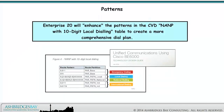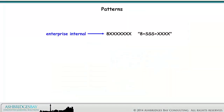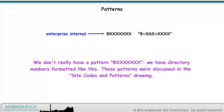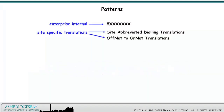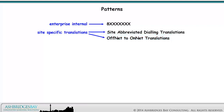Enterprise 20 will enhance the patterns in the CVD NANP with 10-digit local dialing table to create a more comprehensive dial plan. Our first pattern is for enterprise internal numbers formatted as an 8 followed by 7 digits — the 7 digits represent the site code plus the extension. We have directory numbers formatted like this; these patterns were discussed in the site codes and patterns drawing. We also have site-specific translation patterns, including site-abbreviated dialing translation patterns for individual sites, and off-net to on-net translation patterns to translate long-distance off-net calls to on-net.